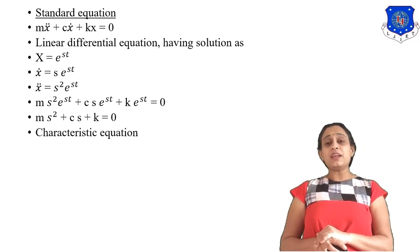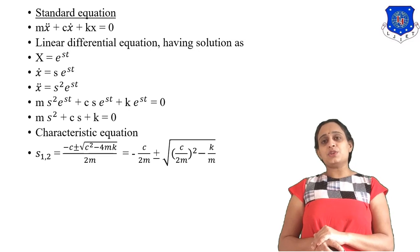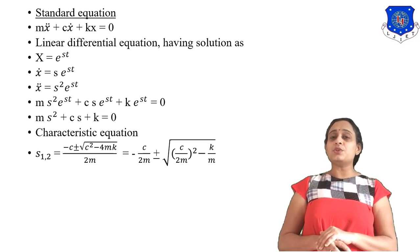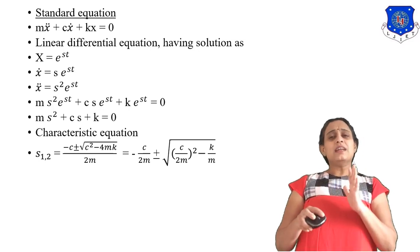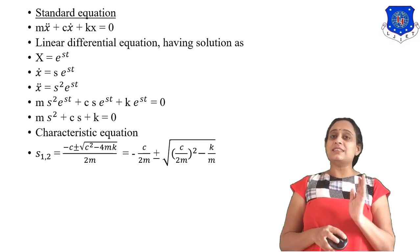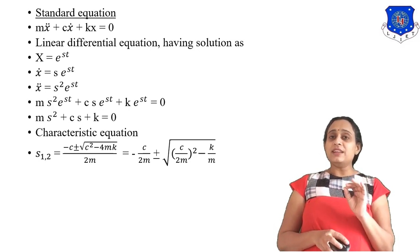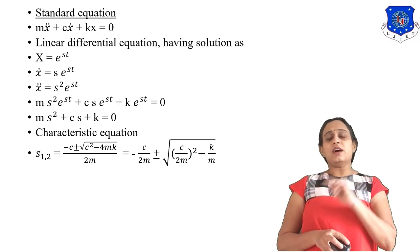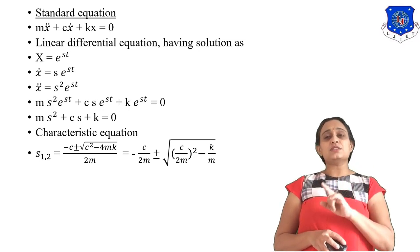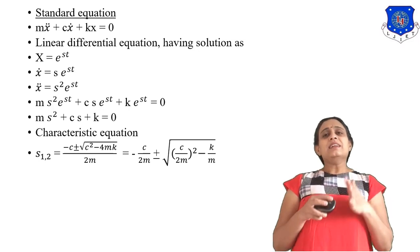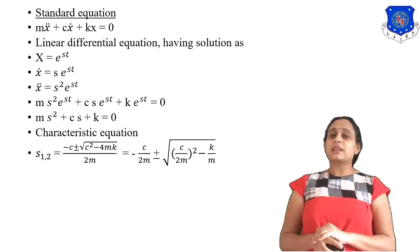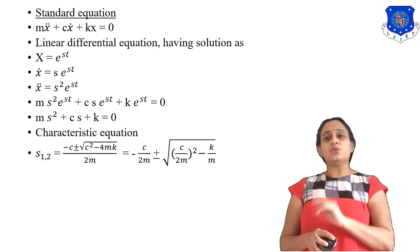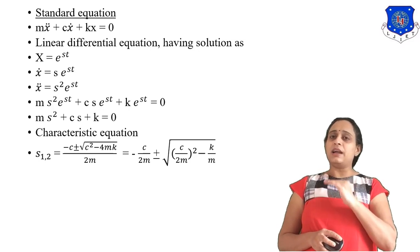From the characteristic equation we get two different roots s1 and s2. The roots are: s1, s2 = [-c ± √(c² - 4mk)] / 2m, which simplifies to: -c/2m ± √[(c/2m)² - k/m].